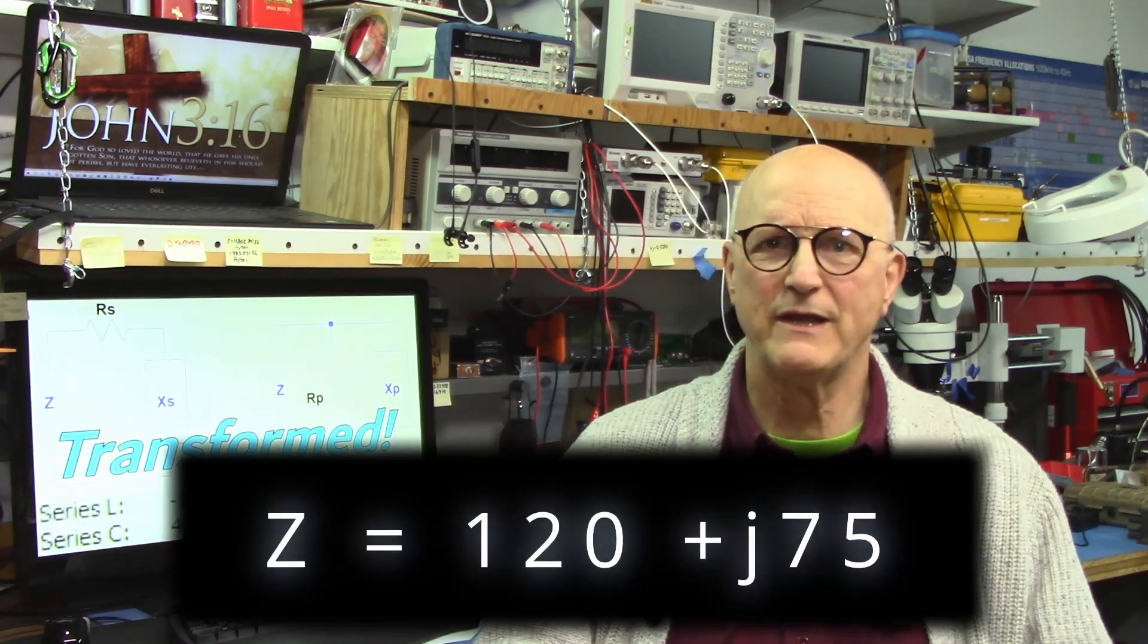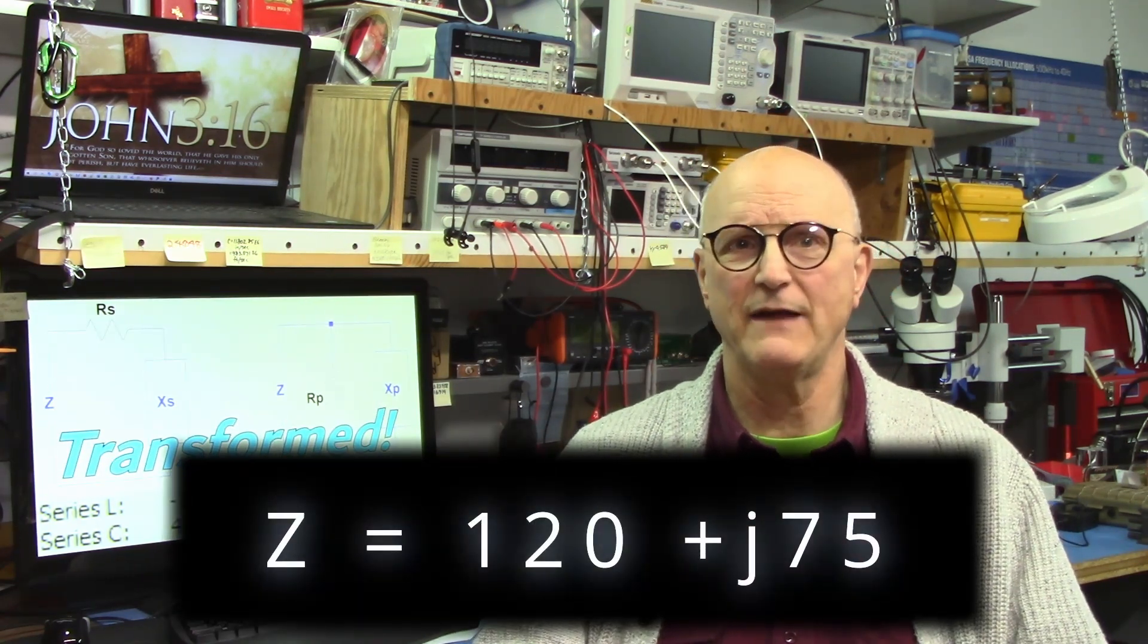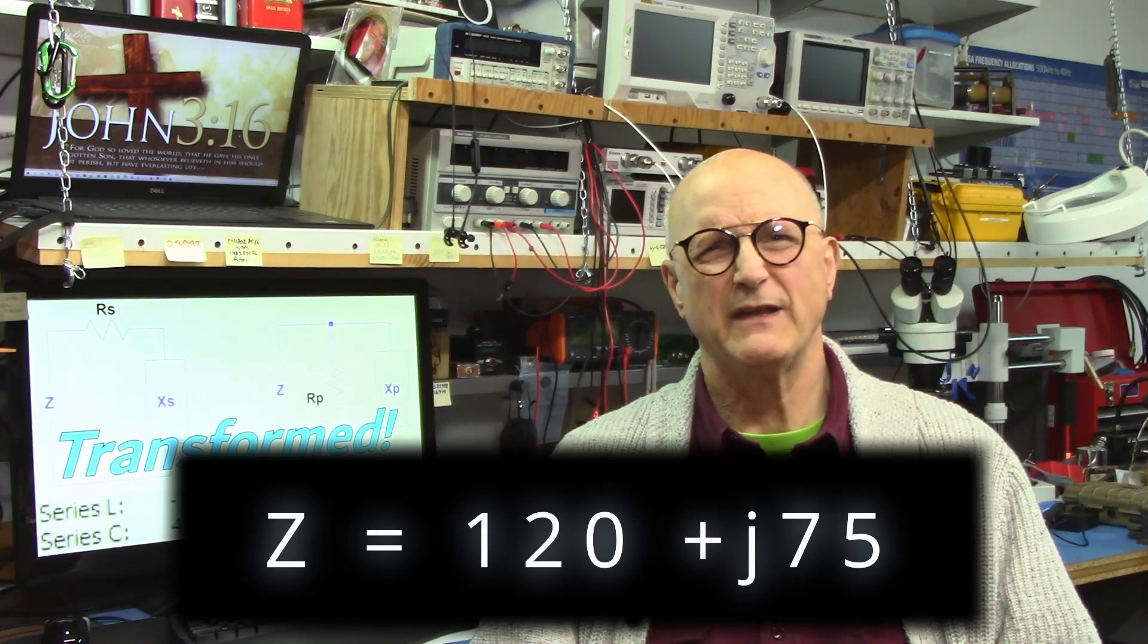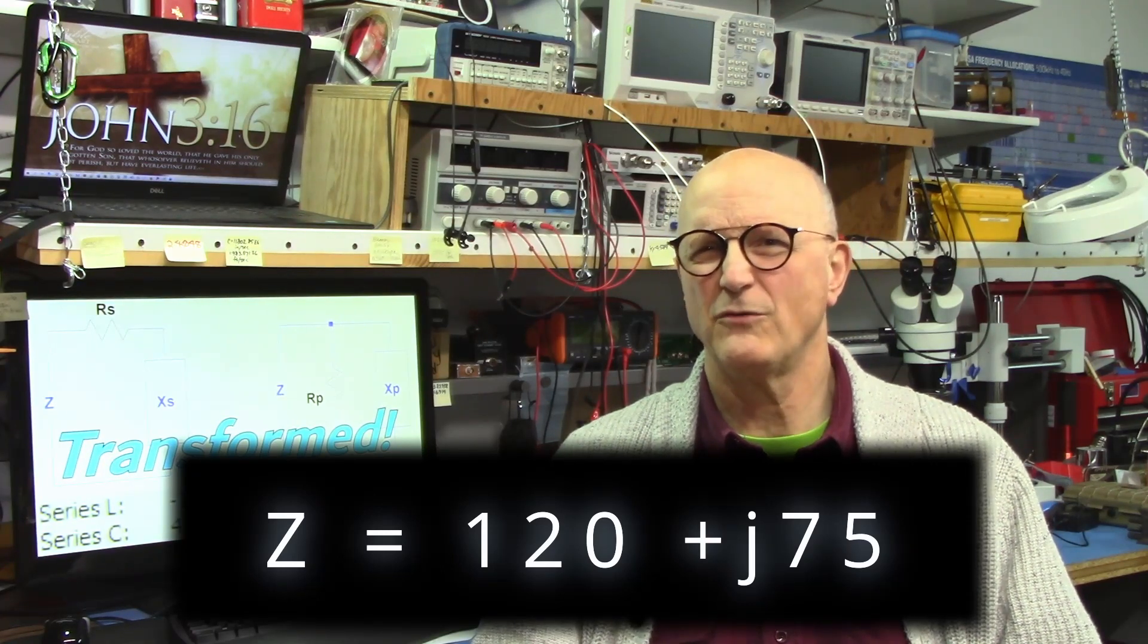In a similar fashion, these parallel r and parallel x values are provided to help us in these sorts of calculations only in the impedance admittance realm. If, for instance, I measured the impedance to be 120 plus J75 and I wanted to add something to this to give me a nice 50 ohms, well how do we do this?